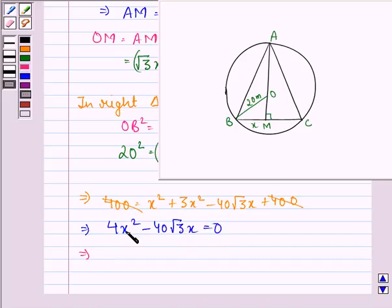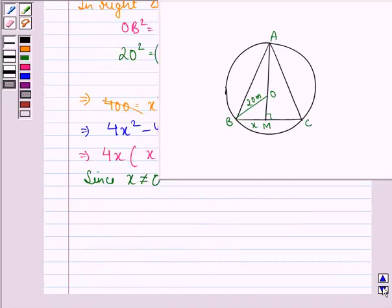So, this implies, now in these two terms, we have 4x common. So, we take out 4x and in the bracket, we have x minus 10 root 3 equal to 0. Since x is not equal to 0, therefore, we have x minus 10 root 3 equal to 0 and this implies that x is equal to 10 root 3.